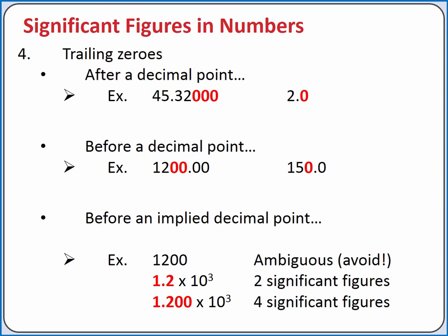Or the measurement could have been taken with an instrument that could tell the difference between 1,200 and 1,210, so that the ones digit was estimated.